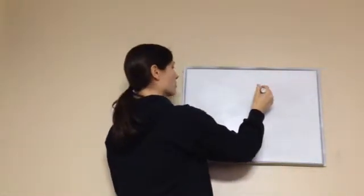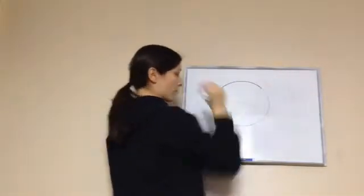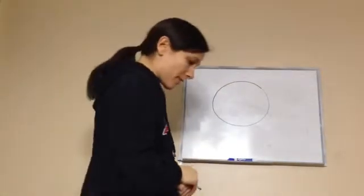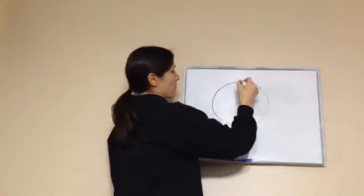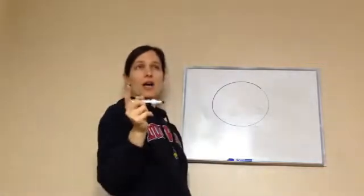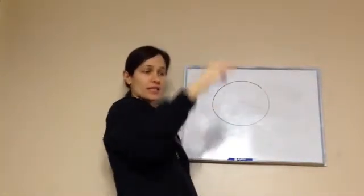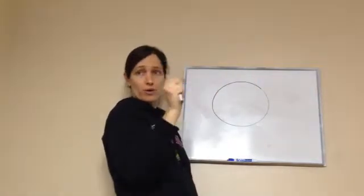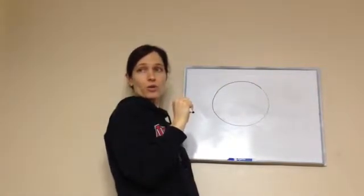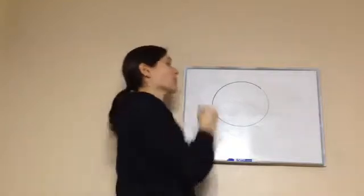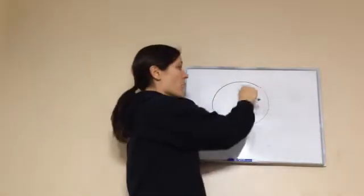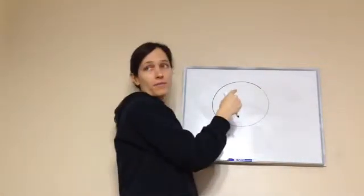Last thing we're going to learn is the measures of a circle. So draw a circle on your page. Do you remember just a second ago I told you that a polygon, when you're measuring the distance around a polygon, what's it called? Perimeter, very good.